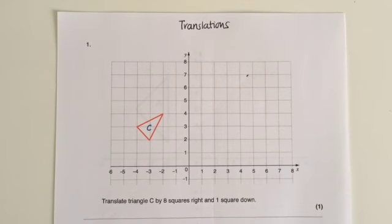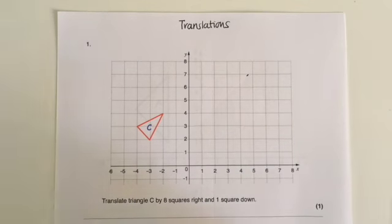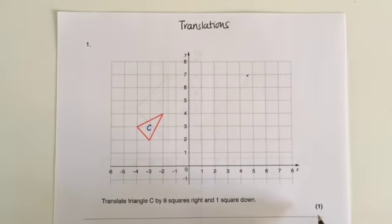Translations are the least scored type of transformation. They're only usually ever worth one mark because they are meant to be the most straightforward.